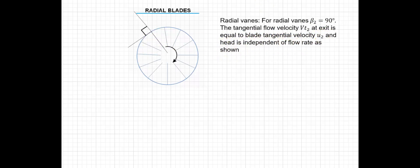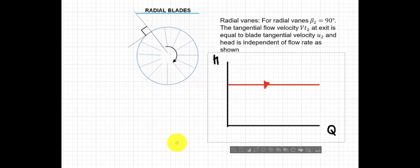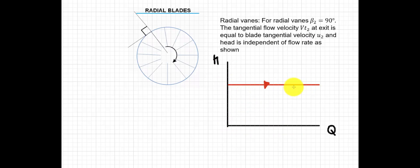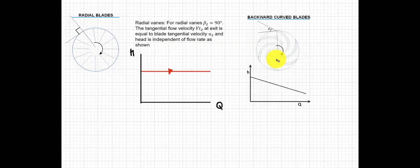If you're going to plot the head versus the volume flow rate for radial blades, we have a constant head with an increasing volume flow rate — starting from zero, we have a constant head. Next, we have another type of blade which is the backward curve blade.